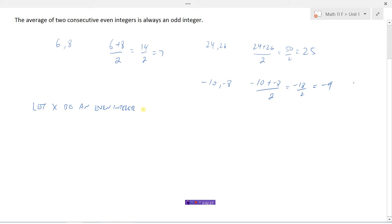So if we start with x being an even integer, then we know x plus 2 is the next even integer. Because we know that numbers go even, odd, even, odd, even, odd. So if I start with x, the next one's got to be x plus 2, 2 more than it.